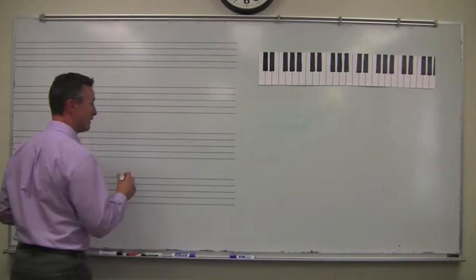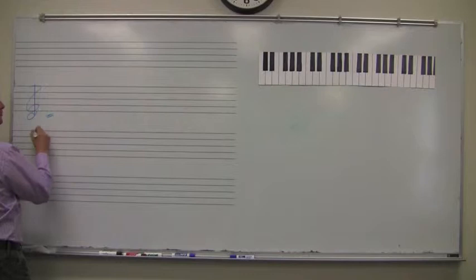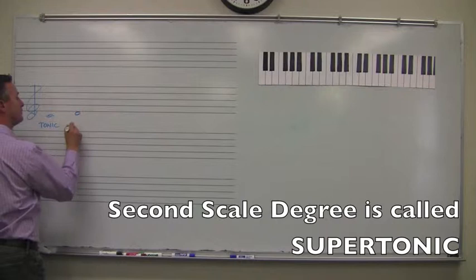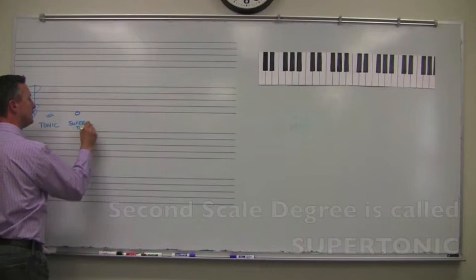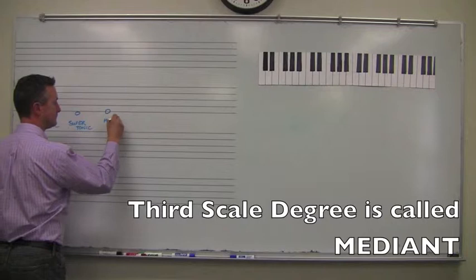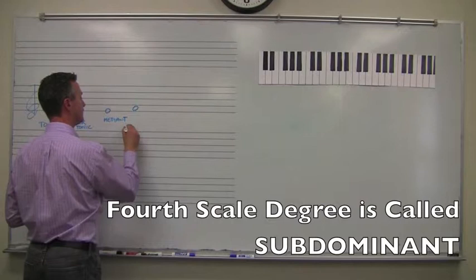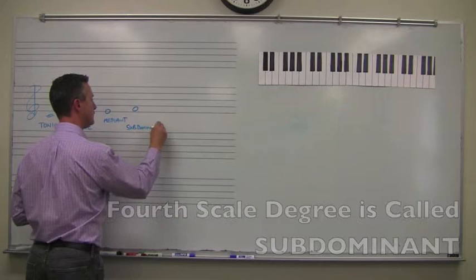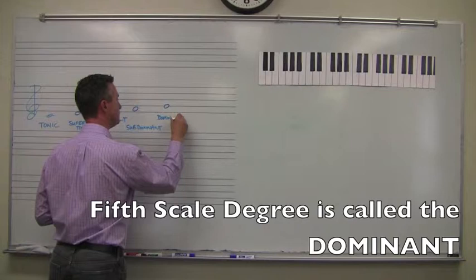So the first scale degree, I'll try and fit this all into one line here, we'll use a C major scale, is tonic. The second scale degree, supertonic. The third scale degree, mediant. The fourth scale degree, the subdominant. The fifth scale degree, the dominant.